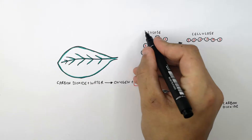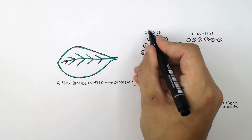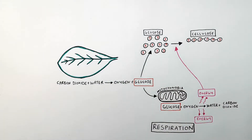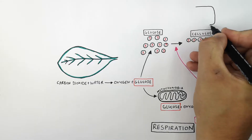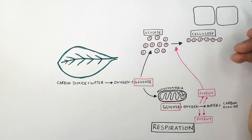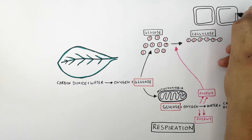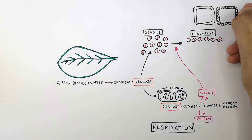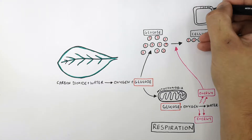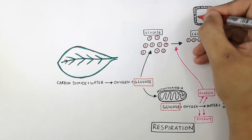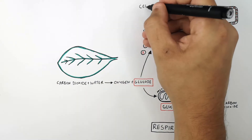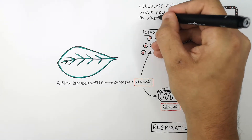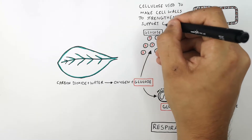Cellulose is used in plant cell walls. What I'm drawing here are plant cells — these here are the cell walls, with cellulose represented inside them. This cellulose is used to make cell walls in plant cells only, and it functions to strengthen and support the cell walls.